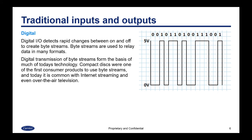Digital I/O detects rapid changes between on and off to create byte streams. Byte streams are used to relay data in many formats. Digital transmission of byte streams forms the basis of much of today's technology. Compact discs are one of the first consumer products to use byte streams, and today it is common with internet streaming and even over-the-air television.